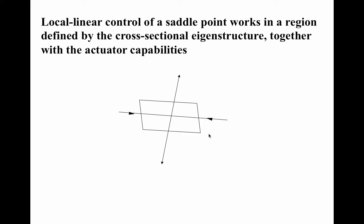As an aside, saddle points in nonlinear systems only look like this locally. If we backed up, we would see that the stable and unstable manifolds actually curve. Then you need nonlinear control, which is much, much harder, and we will not go there in this course.